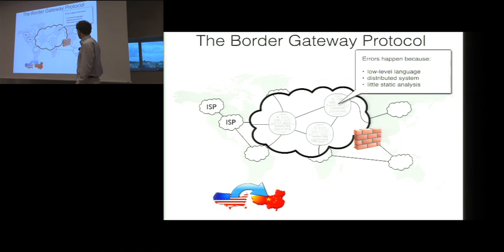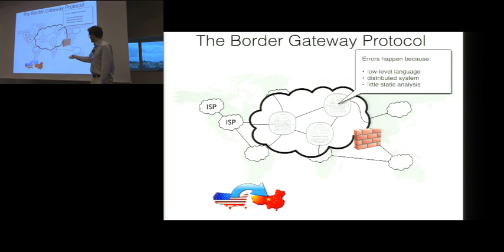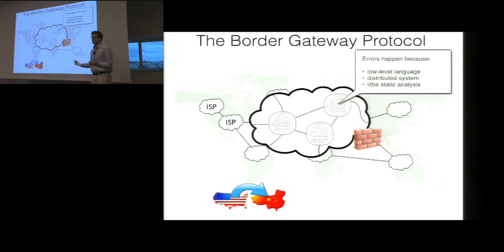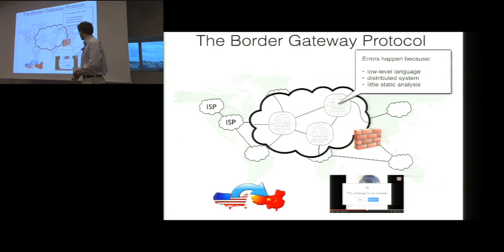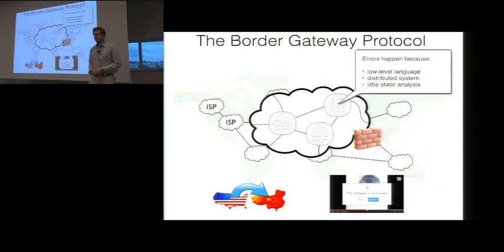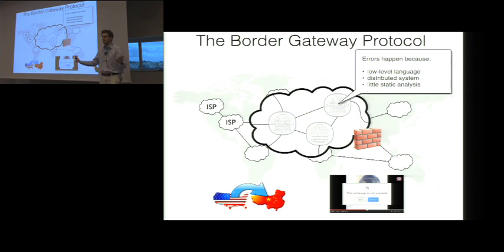This has led to very highly visible errors. For example, the United States forwarded much of its military traffic through China Telecom — this was actually covered by a congressional report. Or YouTube was down for two hours because of a misconfiguration in an ISP in Pakistan. So even very small errors in very small ISPs somewhere in the world can take down a big player like Google.